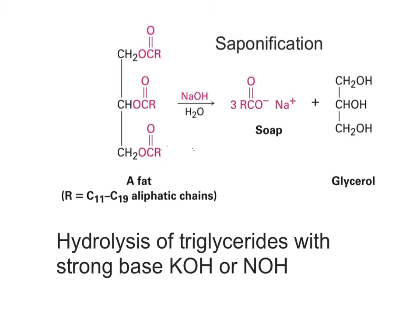Saponification is the base-promoted hydrolysis of fats and oils producing glycerol and a mixture of fatty acid salts called soap. The crude mixture contains soap, excess base, and glycerol, and it can be precipitated by adding a strong solution of sodium chloride.